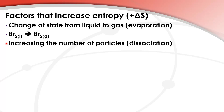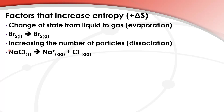Our next example is increasing the number of particles. When solid sodium chloride is dissolved in water it dissociates into Na+ and Cl− ions. So you have one mole of solid ionic compound dissociating into two moles of aqueous ions. That leads to an increase in entropy.